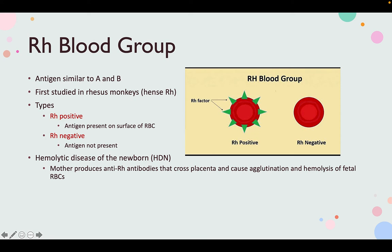Before moving on, let's clarify: when combining ABO, O, and RH designations, you can be A positive, B positive, A negative, or B negative. The positive or negative simply refers to RH status. So AB positive means AB blood type and RH positive; O negative means O blood type and RH negative.